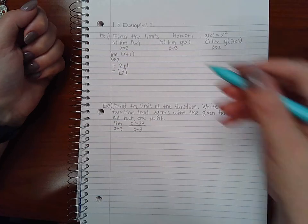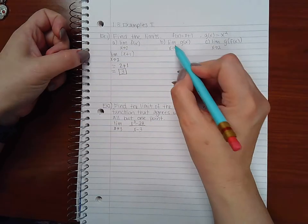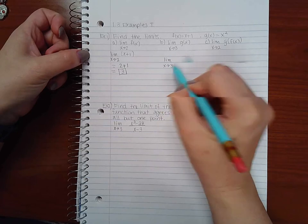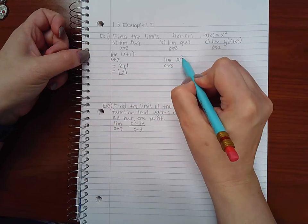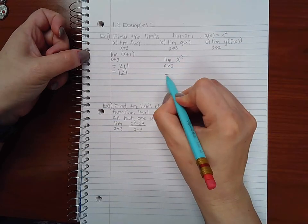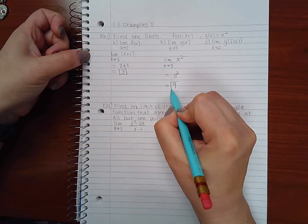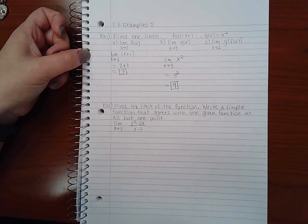For part b it says find the limit as x approaches three of g of x, which is x squared. Again I will try direct substitution and three squared is nine, and therefore direct substitution works in this particular case.